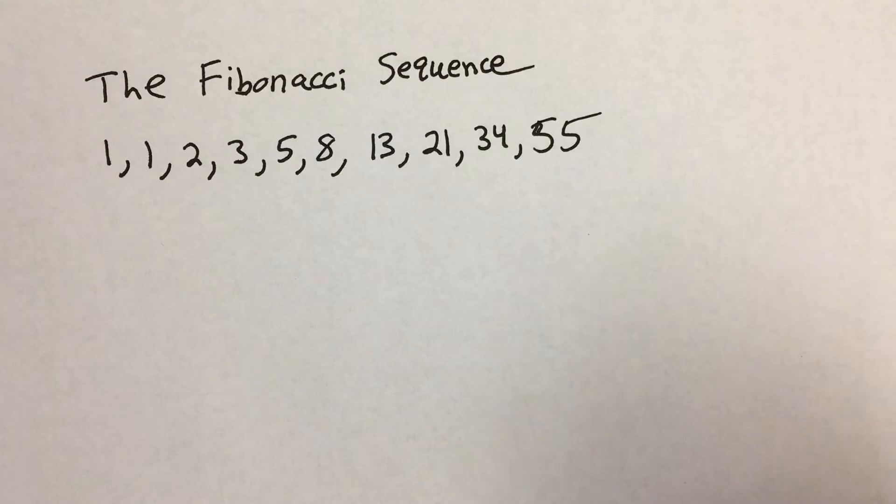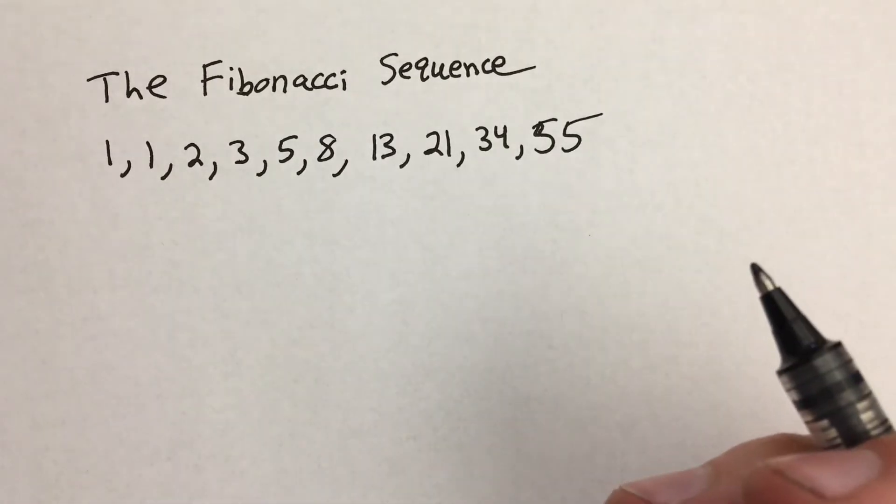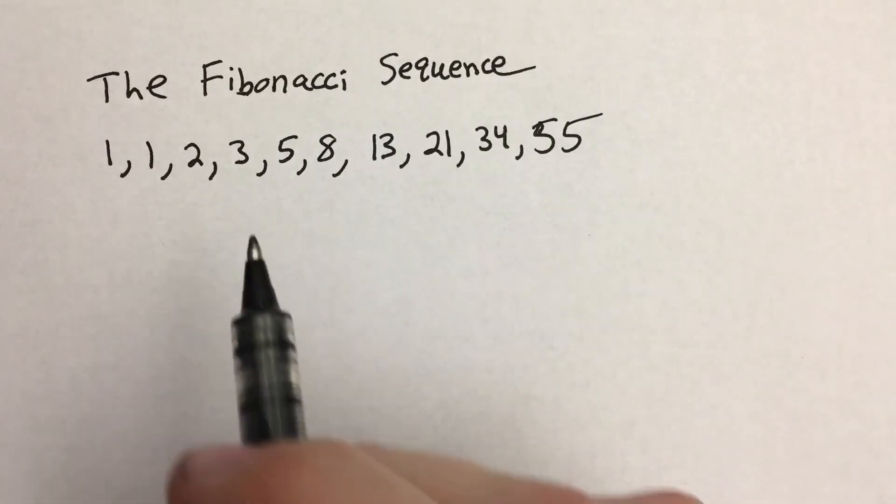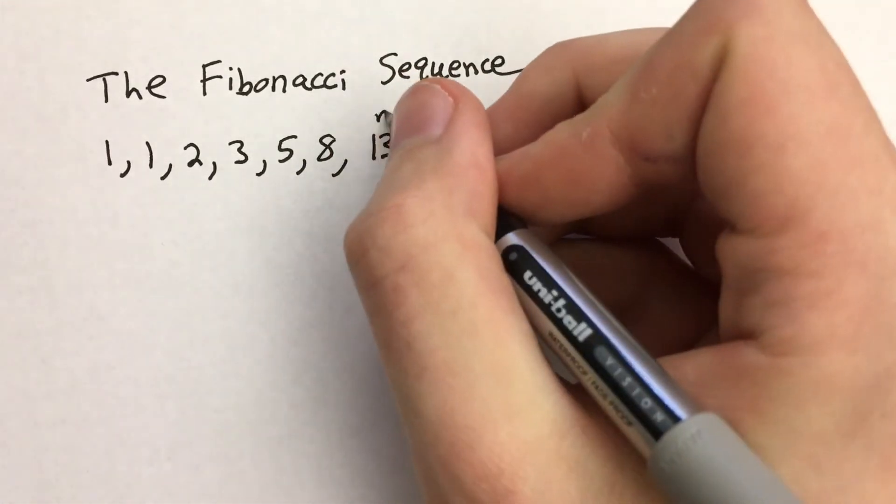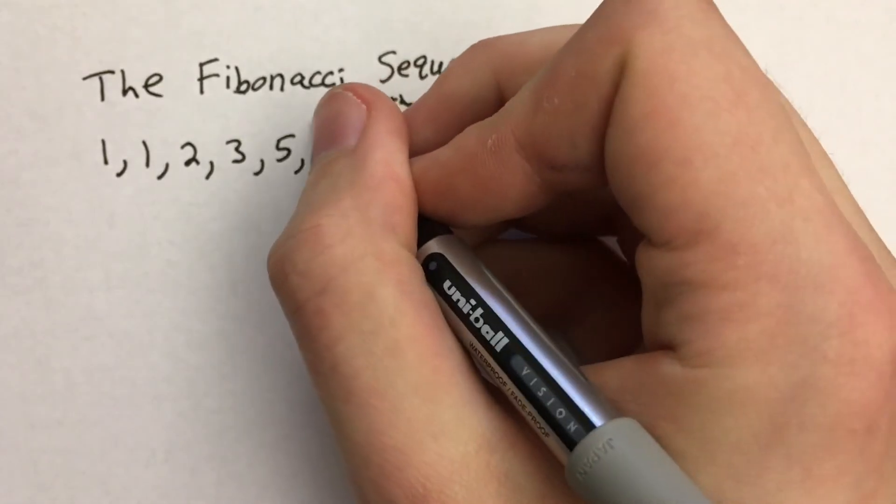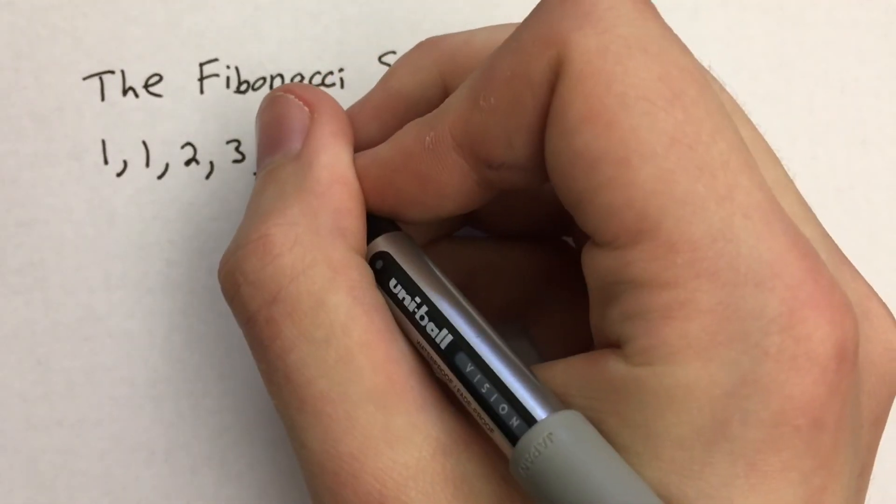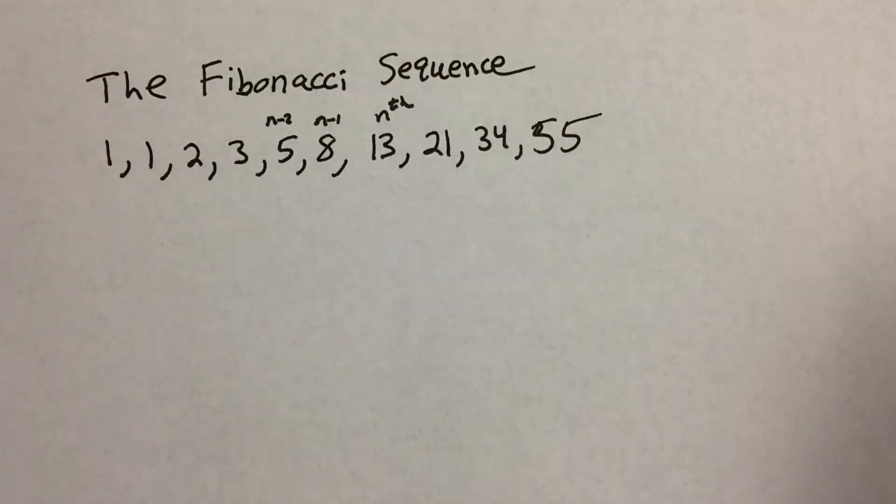And so just based off of that sentence you should already know what the recurrence relation is, right? Each term is equal to the sum of the two terms before it. So the nth term should be the n minus 1 term and the n minus 2 term added together.